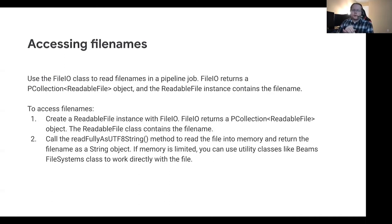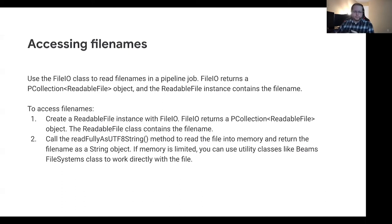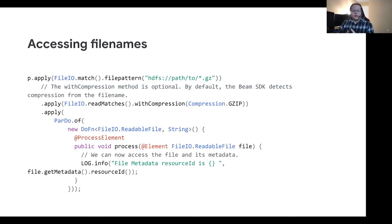Another key thing: sometimes you need the file name of a file while processing data elements in that file — something reasonably common in the finance space. Instead of taking the file metadata and just returning those values, you can create an actual readable file instance with FileIO, which will contain the file name. From there you can do a variety of processing within that file while retaining access to that file name. For example, if you wanted to split out chunks of that file, you could transform that readable file into a key-value of file name and some data element, and continue processing that way.